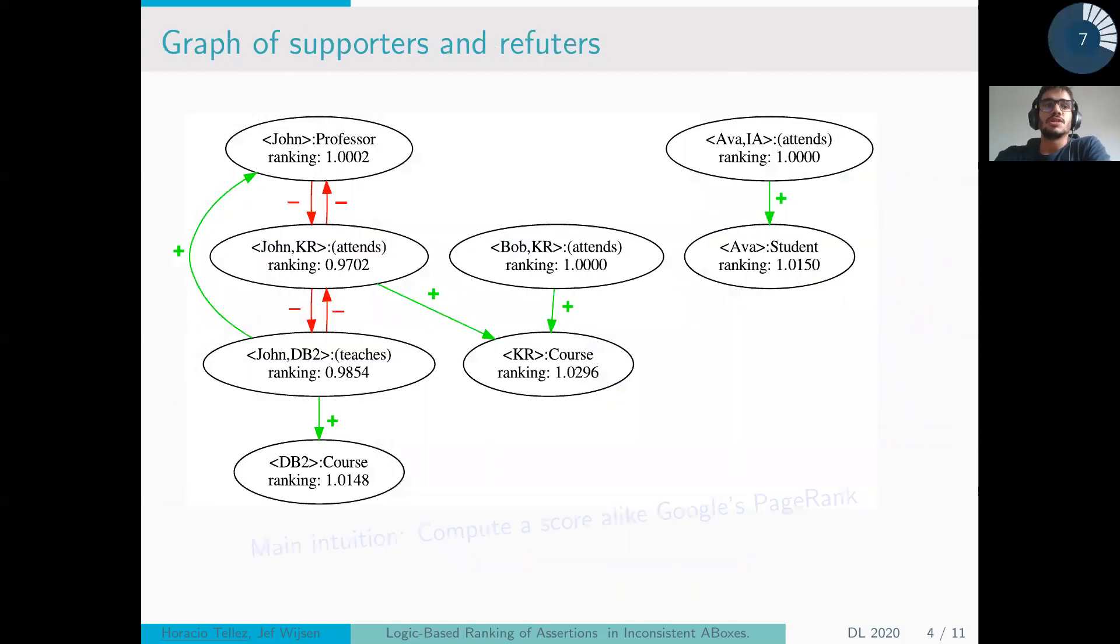We can visualize this using a graph of supporters and refuters, where the edges are positive and negative following the positive and negative interactions, and where the nodes are groups of assertions. Our intuition was to use this structure to compute a score alike Google's PageRank.